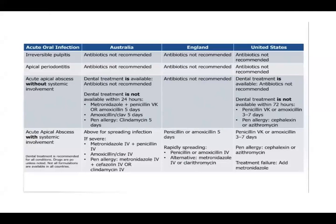I've looked at clinical guidelines published in different countries on how to use antibiotics in dental practice. When a patient has irreversible pulpitis, in Australia, England, and the United States, antibiotics are not indicated in those guidelines. Even when a patient has apical periodontitis, the Australian, English, and American guidelines do not recommend antibiotics. For acute apical abscesses without systemic involvement, the English guidelines do not recommend antibiotics.